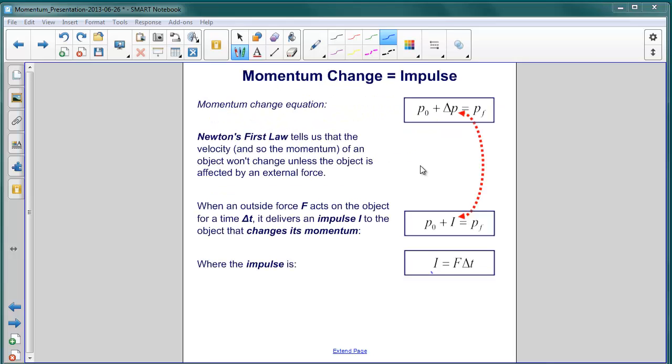We've considered momentum change. Now let's try to understand what impulse is. The equation that we just looked at is the momentum change equation. That P naught plus a change in momentum delta P leads to a momentum for an object of P sub f.